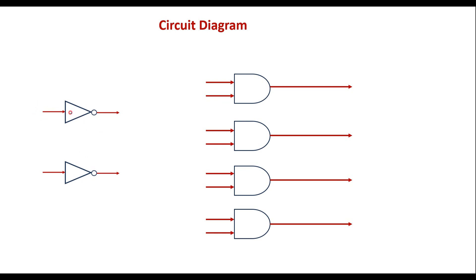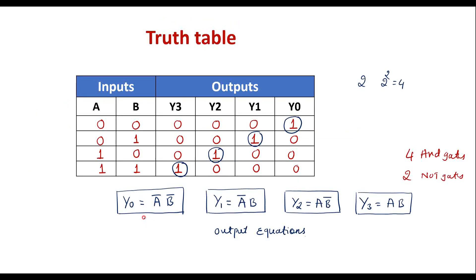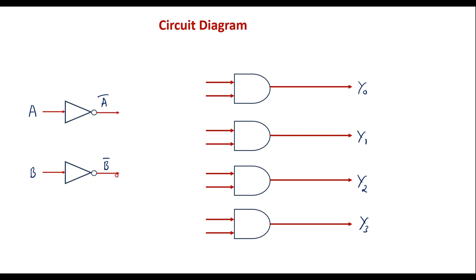Let me consider the first inverter: input is A and output is A-bar. Let the second inverter input be B, giving output B-bar. I will label the AND gate outputs as Y0, Y1, Y2, and Y3 respectively. To implement Y0, which equals A-bar B-bar, we connect A-bar and B-bar to the first AND gate. So connect A-bar here and connect B-bar to this AND gate; the output is A-bar B-bar.